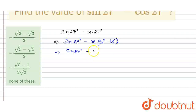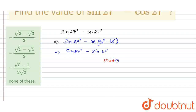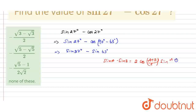So it will become sin 27 degree minus cos(90 minus theta) equal to sin theta. So sin theta equals 63 degrees. It is in the form of sin A minus B, so the sin A minus sin B formula I am going to use here. Sin A minus sin B equals 2 into cos((A plus B) divided by 2) into sin((A minus B) divided by 2).